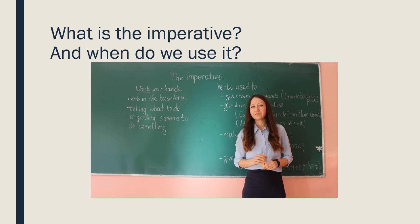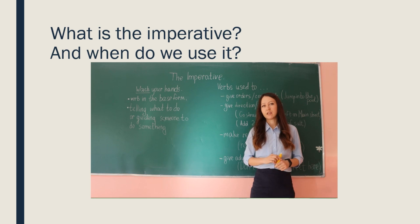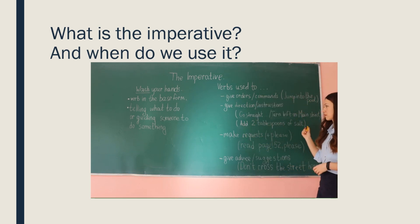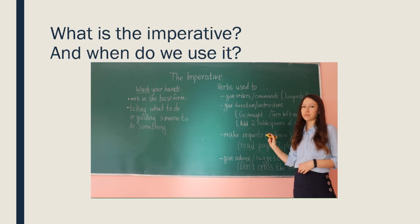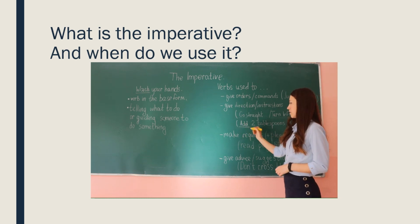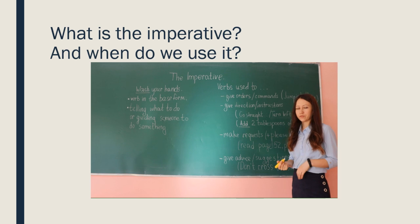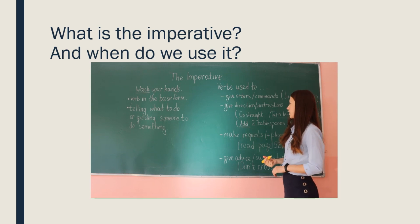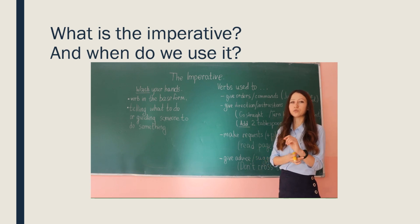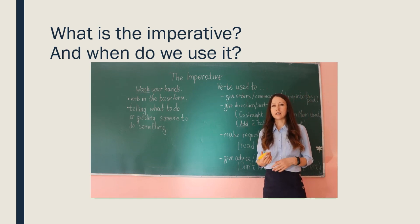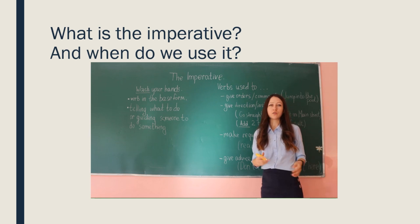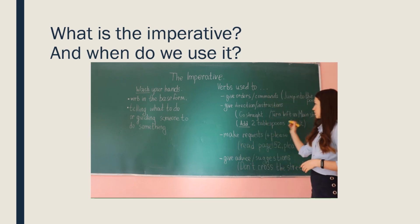Also, imperatives are often used in different recipes. For example, add two tablespoons of salt. This is sentence from a recipe. То есть, the word add будет у нас imperative. Also, when you are giving direction to someone how to get to your home, for example, you are saying like go straight, turn left on the main street. So, these verbs go, turn left, they are imperatives as well.